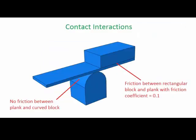We will have contact in two regions. The first is between the plank and the curved block. We will make this interaction frictionless. The second is between the rectangular block and the plank. Here we will specify a friction coefficient of 0.1, and we'll tell Abacus it is isotropic, meaning that the friction coefficient is the same in all directions.